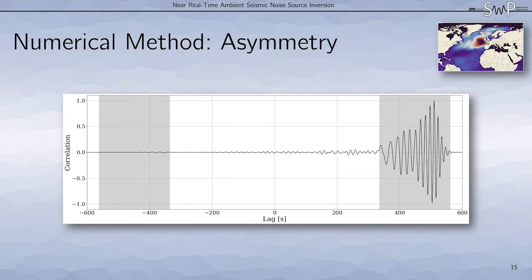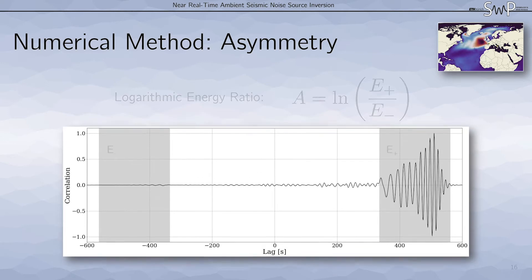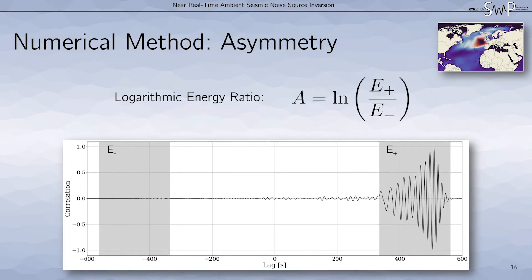And this asymmetry tells us where the dominant noise sources are. So how can we use this to then infer information about the noise source distribution? What we do is we take a measurement in this cross-correlation, namely the logarithmic energy ratio. To calculate the logarithmic energy ratio, we compute the energy in the expected surface wave arrival time windows in the causal and a-causal part of the cross-correlation. We then take the ratio and the natural log.